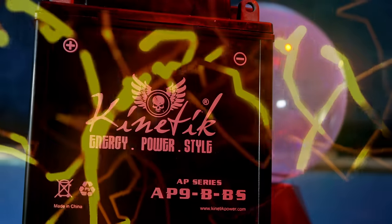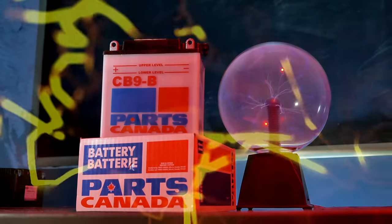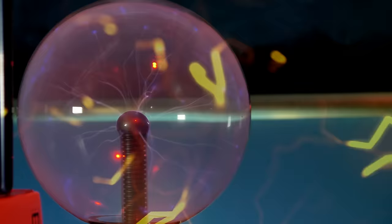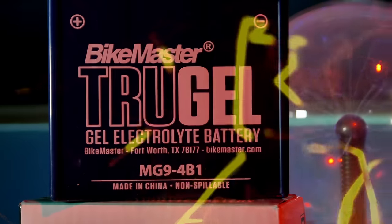Each of these 12 volt batteries contains 9 amp hours of energy. Each could be fitted to the same late model motorcycle, but each is different.